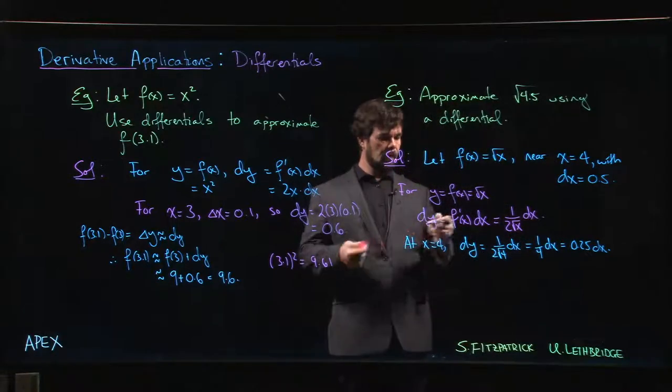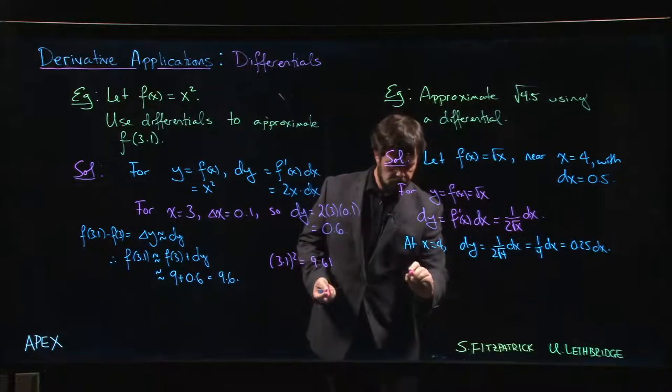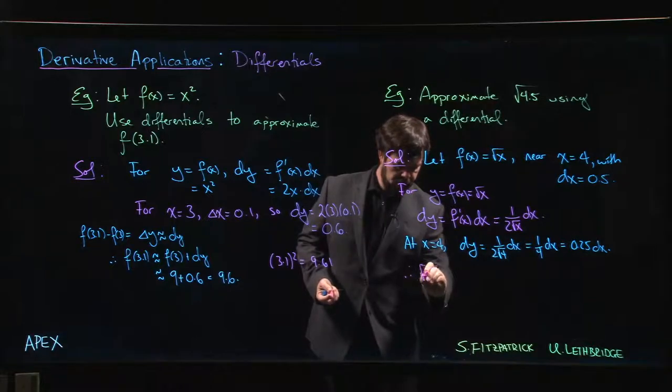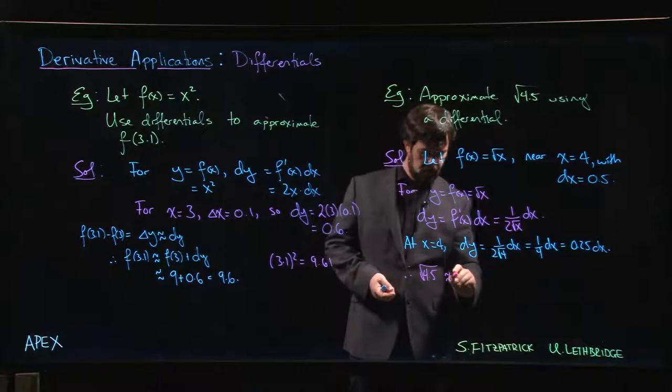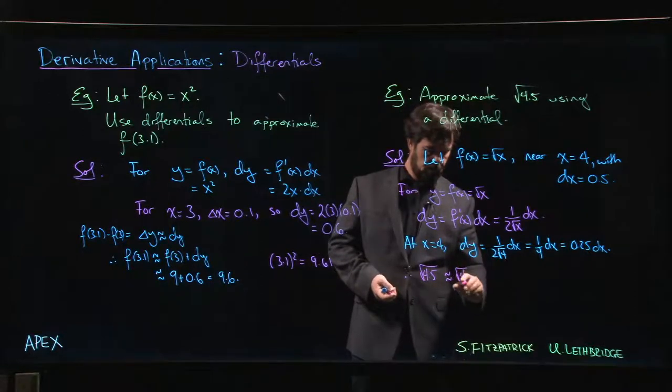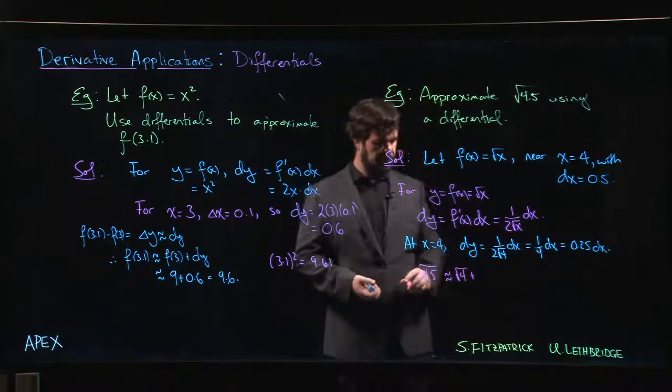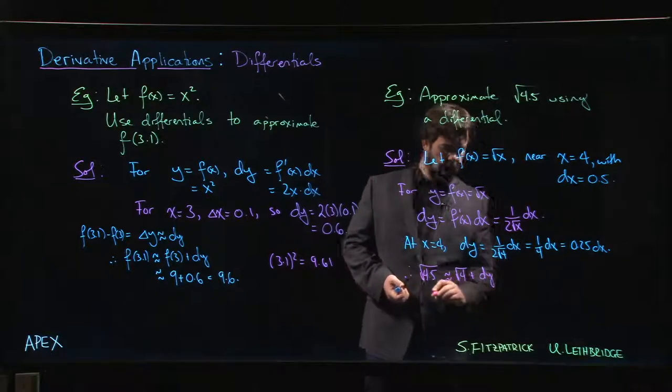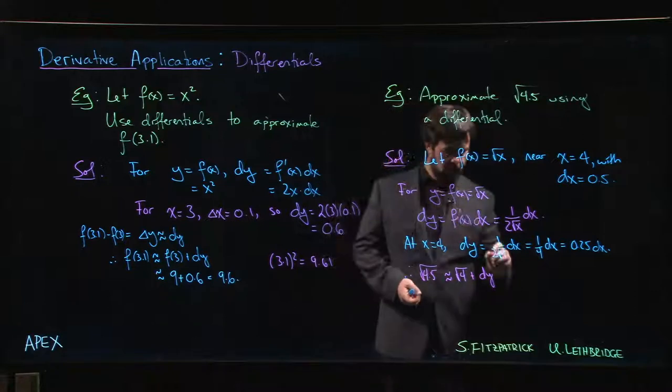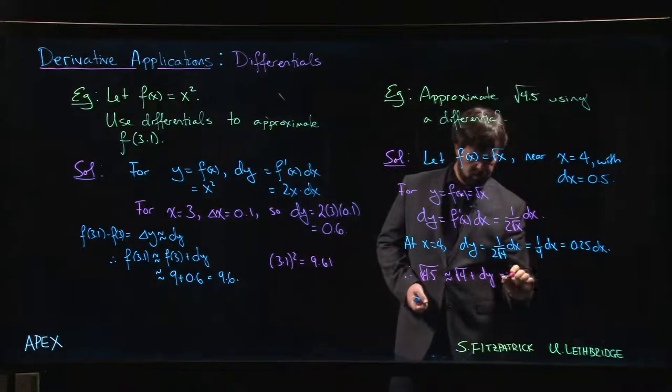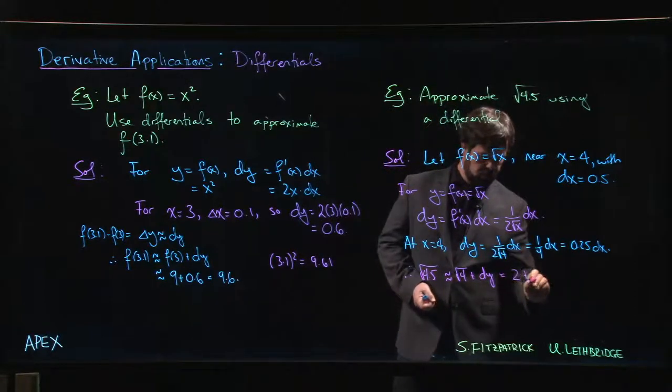So now we know that the square root of 4.5 is approximately the square root of 4 plus dy, where dx is going to be our 0.5. So this is going to be 2 plus 0.25 times dx.